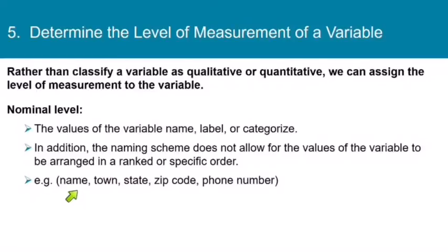So some examples of data at the nominal level would be name, town, state, zip code, or phone number. You can put names in order, but that doesn't tell you anything about the people. Putting the names in alphabetical order doesn't mean that the people have been put in any kind of meaningful order. Putting zip codes in order doesn't tell you anything about the areas of the country that match up with those zip codes. So all nominal level data can do is really just label things for you.